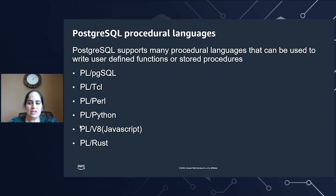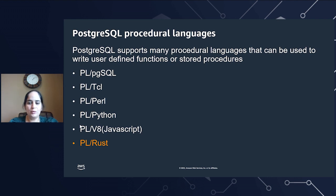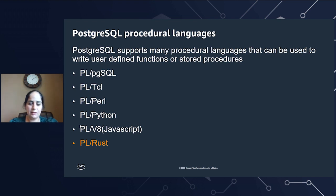PostgreSQL also has the concept of trusted and untrusted languages. A trusted language is one that is safe for an underprivileged user to use without the risk of privilege escalation. Recently, we announced support for the Rust programming language with Amazon RDS for PostgreSQL. Using Rust, you can build high-performance user-defined functions and run them directly inside your PostgreSQL databases.